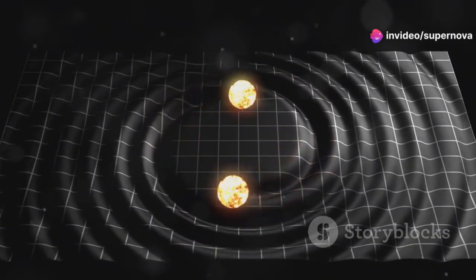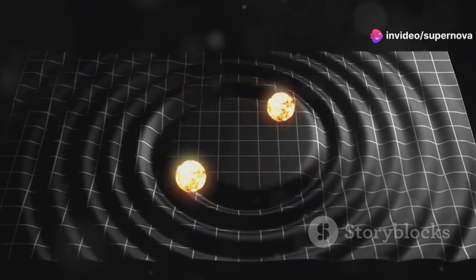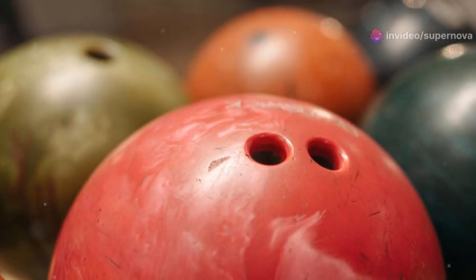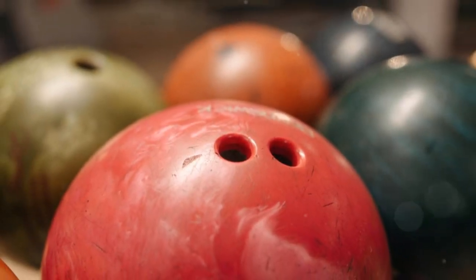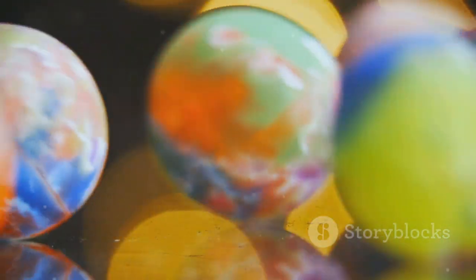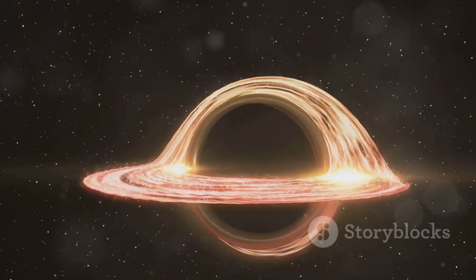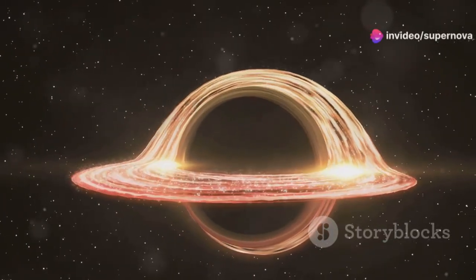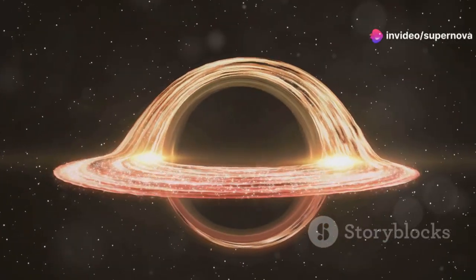Einstein's theory tells us that gravity is not a force but a curvature in space-time. It's like placing a bowling ball on a trampoline. The ball creates a dip, and objects roll towards it. Similarly, massive objects warp space-time, causing other objects to move towards them.